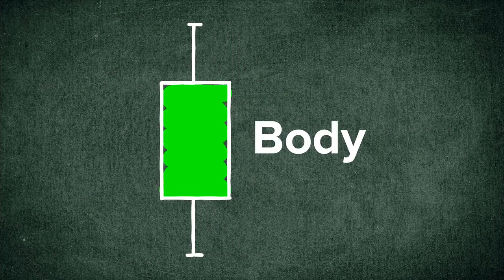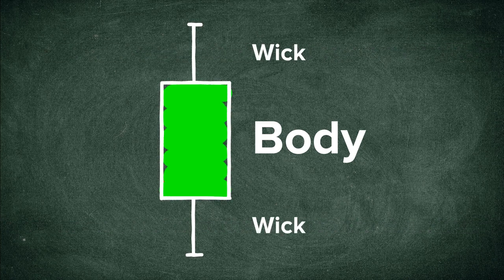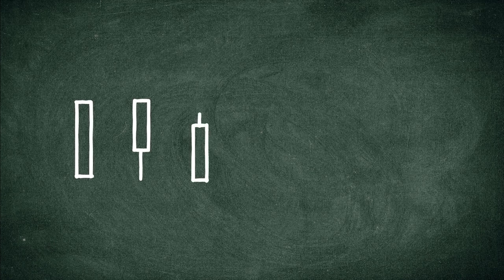This wider portion of the candle is known as the body. The lines above and below, known as shadows, tails, or wicks, represent the high and low price ranges for that time period. Since sometimes the high and low are identical to the opening or closing prices, not all candlesticks have shadows.